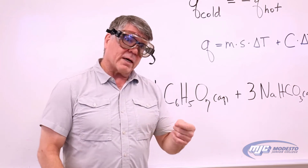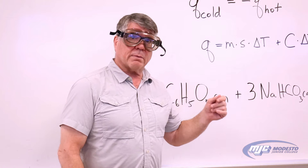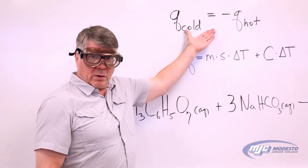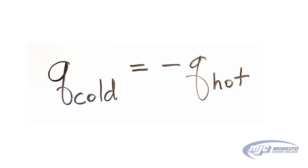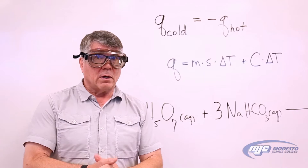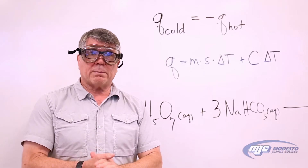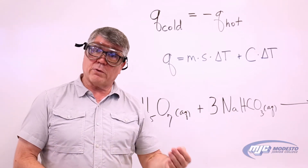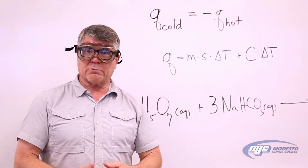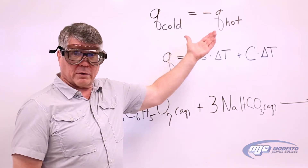The idea in this experiment can be summed up in basically this equation right here. What this says is Q_cold equals minus Q_hot. Q stands for the amount of thermal energy transferred into or out of an object. When you put something cold and something hot together, thermal energy always flows spontaneously from the hot object into the cold object.